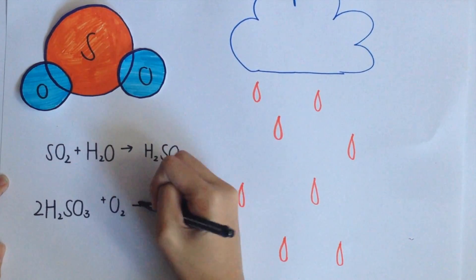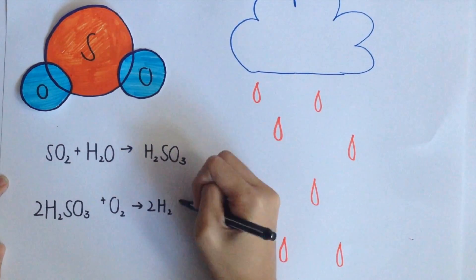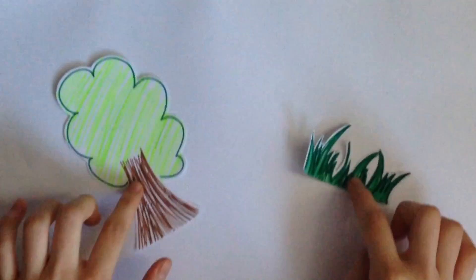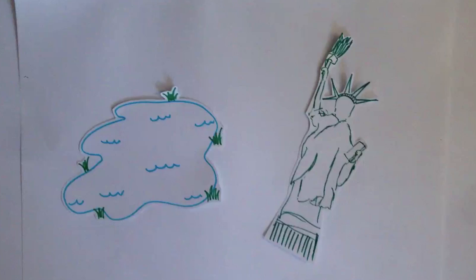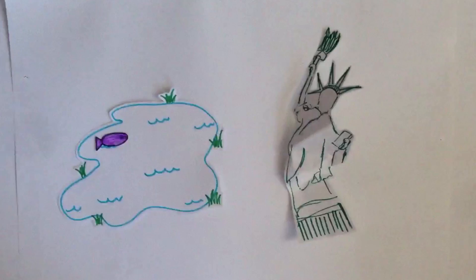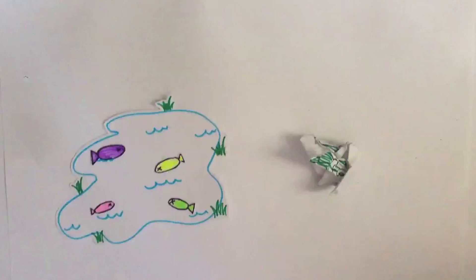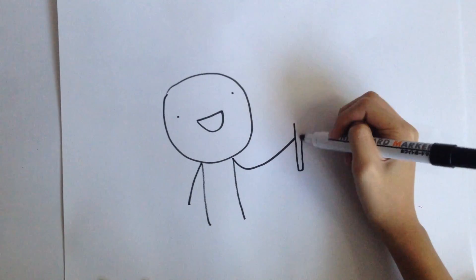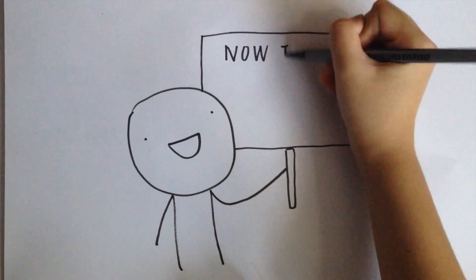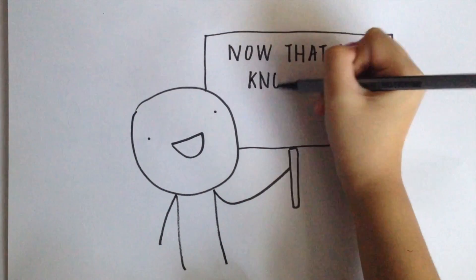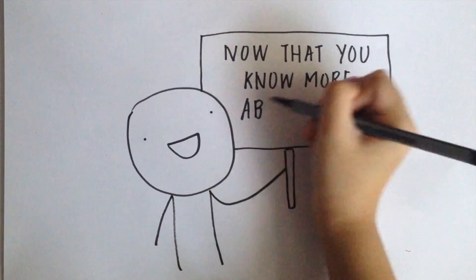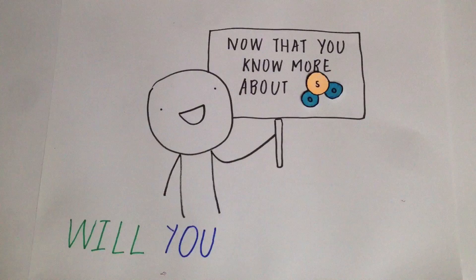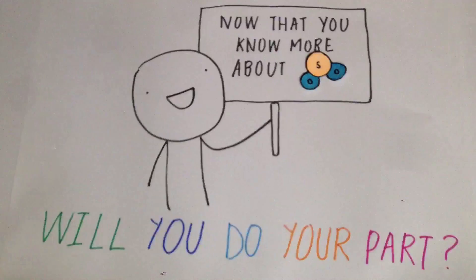It has adverse effects on the environment. It damages trees and crops as it leaches nutrients from the soil, causes acidification of lakes and streams, and accelerates corrosion of buildings and monuments as it reacts with metals and carbonates. Now that you know more about sulfur dioxide, will you do your part in saving the environment?